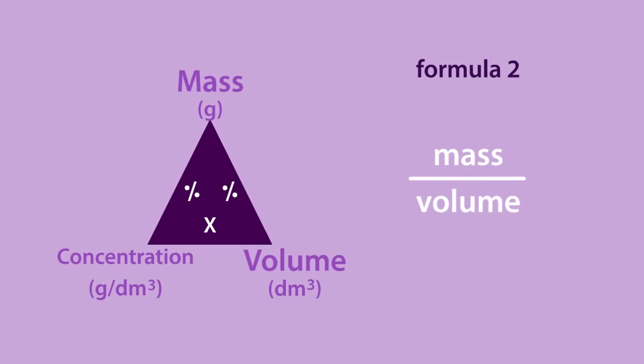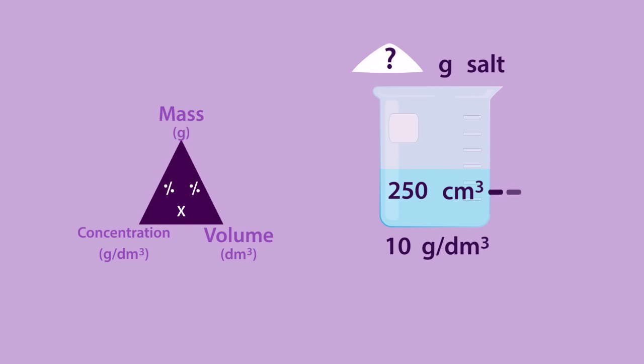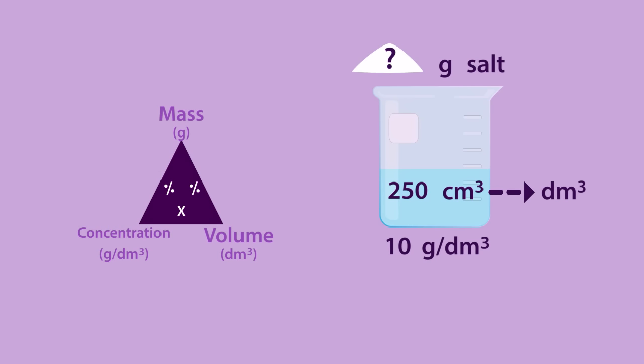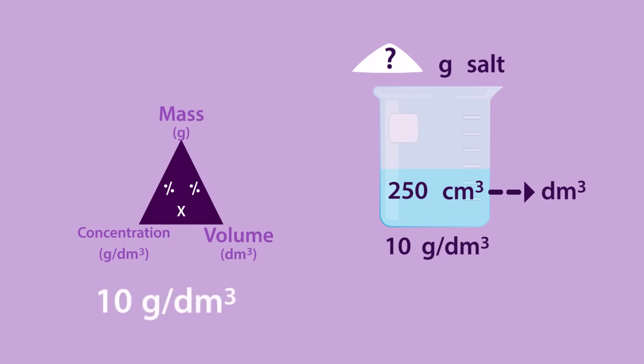Let's try a challenge. If you know that you need a 10 gram per decimetre cubed salt solution, and have to dissolve it to a volume of 250 cubic centimetres, what mass of salt will you need to dissolve? Pause and write down your working out. Don't forget that you have to convert the volume from cubic centimetres to decimetre cubed. Continue when ready. The working out is shown now. Did you get it right?